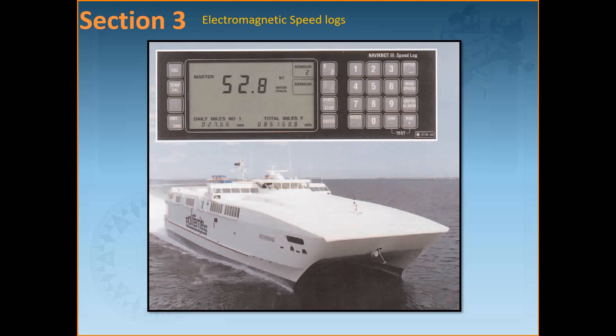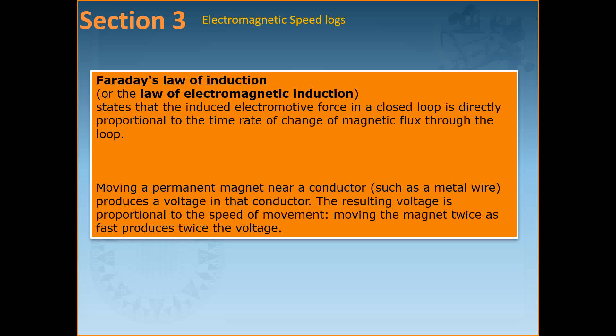The electromagnetic log is a bottom log, meaning the transducer comes out of the bottom of the ship. Common examples include Walker's Manor log and Platts Navinot 3. Some logs are retractable while others use fixed flush-fitting sensors. The operating principle is based on Faraday's law of electromagnetic induction, which states that the induced EMF in a closed loop is directly proportional to the time rate of change of magnetic flux — meaning a permanent magnet near a conductor such as a metal wire produces a voltage proportional to the speed of movement.